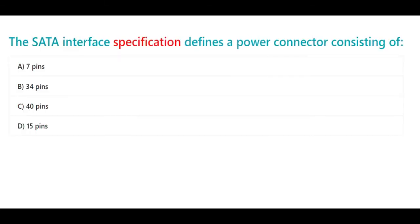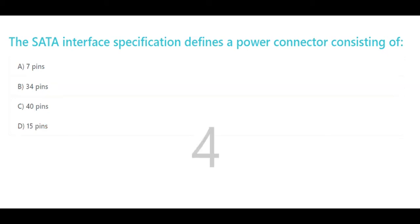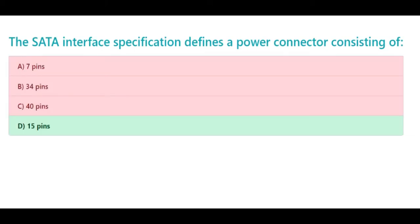The SATA interface specification defines a power connector consisting of: a. 7 pins, b. 34 pins, c. 40 pins, d. 15 pins. The correct answer is d. 15 pins.